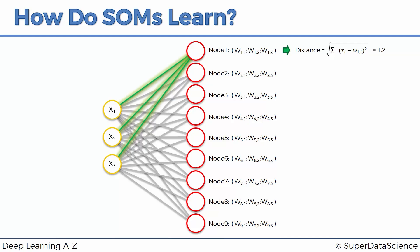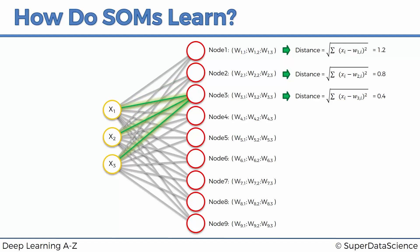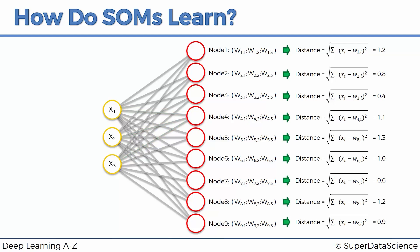So for row number one, the distance to node one is 1.2, to node two is 0.8, and to node three is 0.4 — meaning row one is three times closer to node three than to node one in the original three-dimensional space. We then calculate distances to nodes four and beyond. After calculating all distances, we find that the closest node is node number three. We call this the BMU — the best matching unit. That is the core of the algorithm.